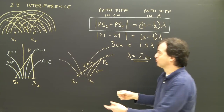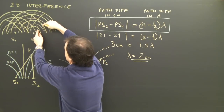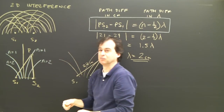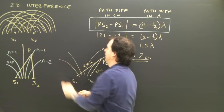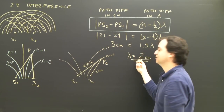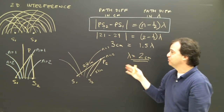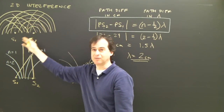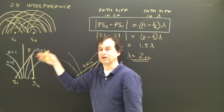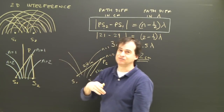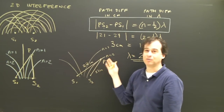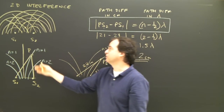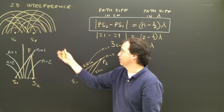You could verify this by taking a ruler and measuring the distance between two crests in the pattern, which should be 2 centimeters. We derived this formula to describe the interference pattern, which we'll adapt in the next video for more complex problems, and eventually use in Young's double slit experiment to calculate the wavelength of light.